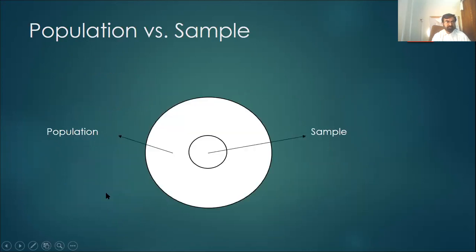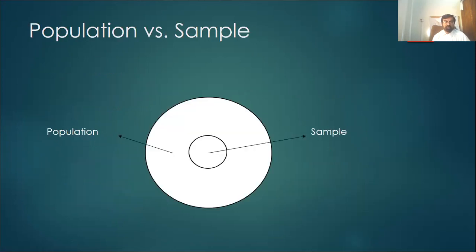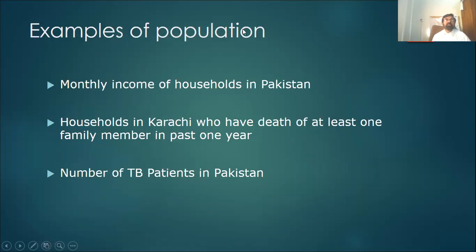This is the bigger, the whole population, and a small fraction of this population is your sample. Examples: monthly income of households in Pakistan - that is population because you are measuring the entire population.